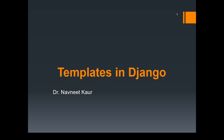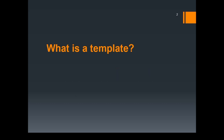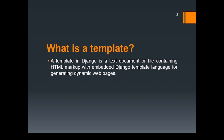Welcome to this lecture. In this lecture, we are going to discuss about templates in Django. So let's first have a look at what exactly is a template. A template in Django is a text document or a file containing some HTML markup with embedded Django template language for generating dynamic web pages. In other words, a template is nothing but a simple HTML file in Django.